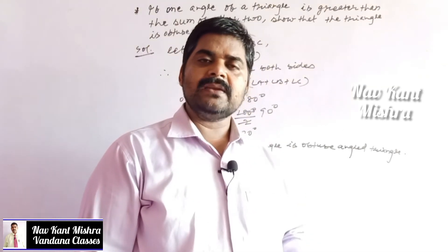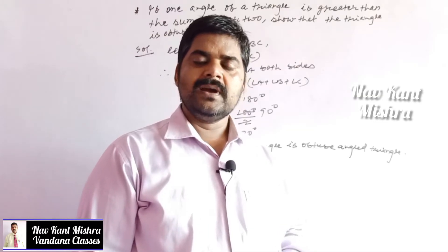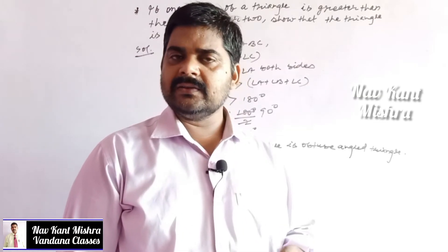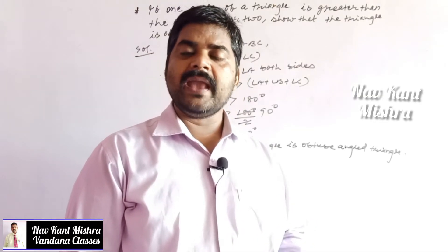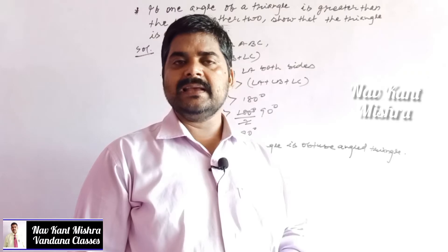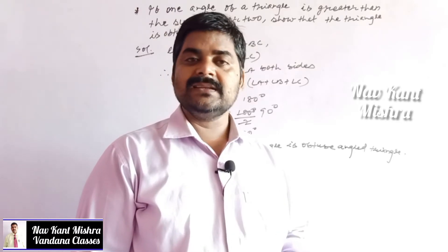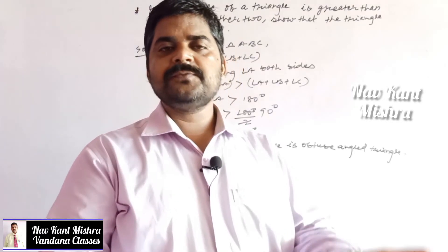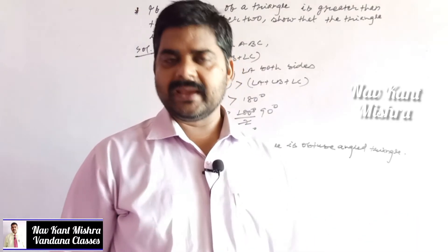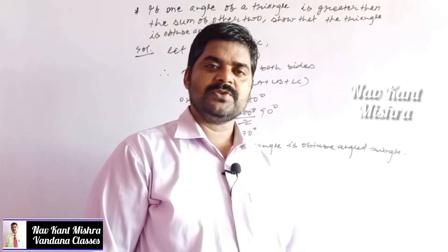By the definition of an obtuse angle triangle, if any angle is greater than 90°, the triangle must be an obtuse angle triangle. That is the solution of this question.